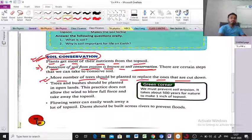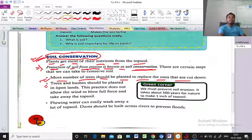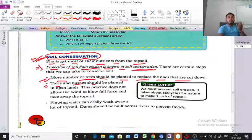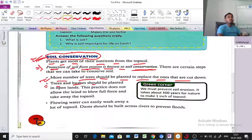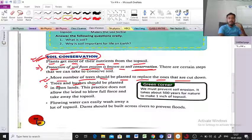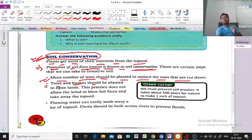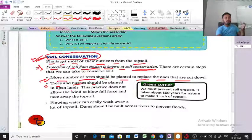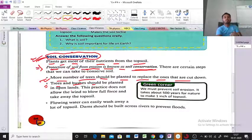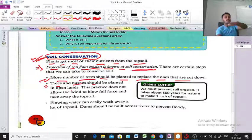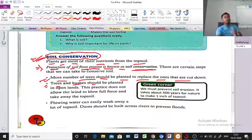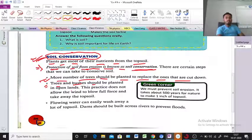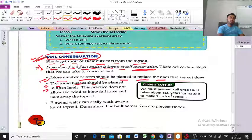Next, trees and bushes should be planted in open lands. Where areas are completely empty, if there is wind flow, more soil will be eroded. So if we plant trees or bushes in those open areas, we can control the soil erosion. That is the point.